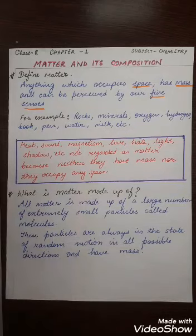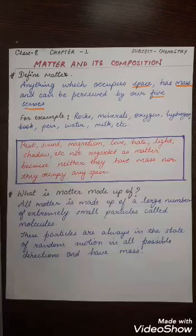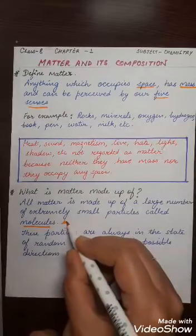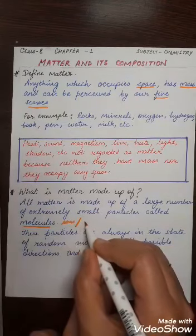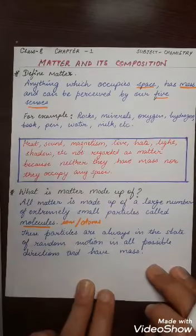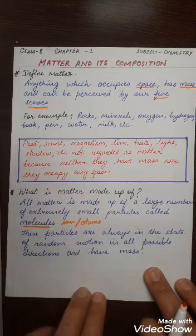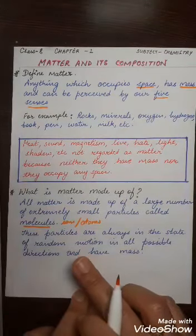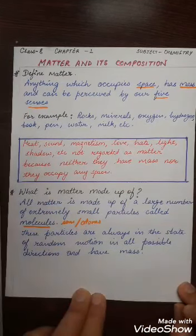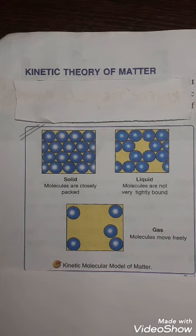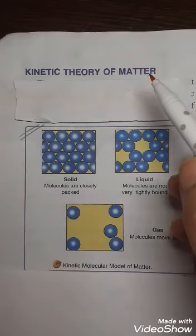All matter is made up of a large number of extremely small particles called molecules, atoms, or ions. These particles are always in a state of constant random motion in all possible directions and have mass. These small, tiny particles — molecules, ions, atoms — are always in constant motion and they have mass.